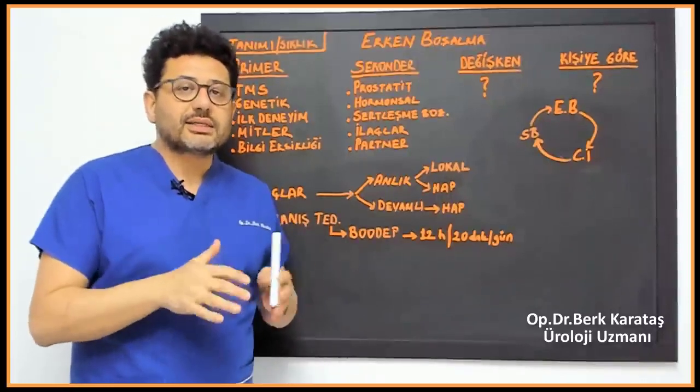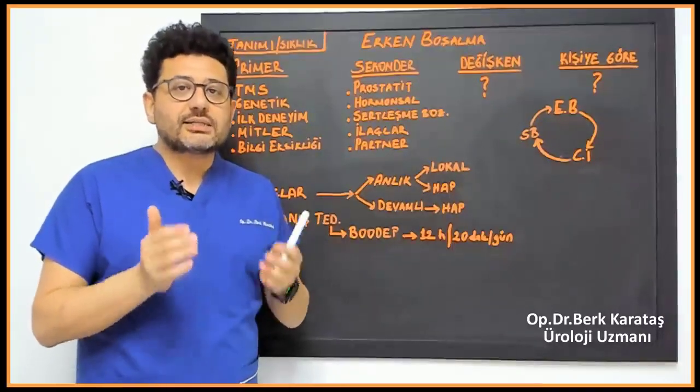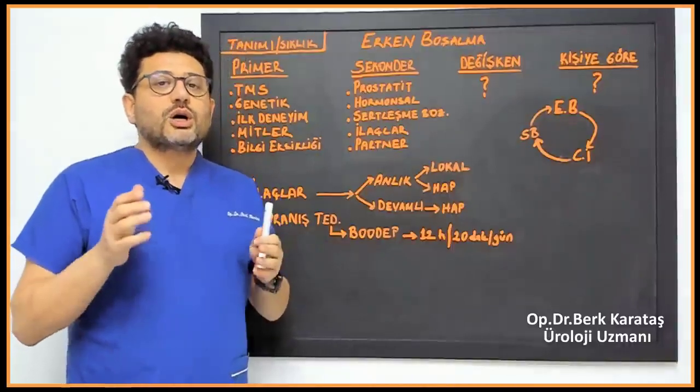We consider it normal that the average time of the penis in the vagina is about 5 to 6 minutes, between 250 to 300 entries.